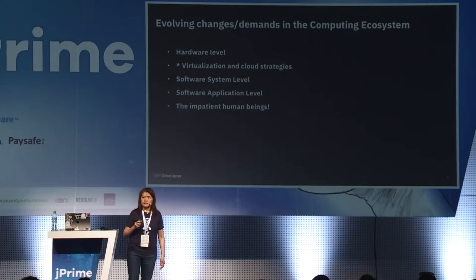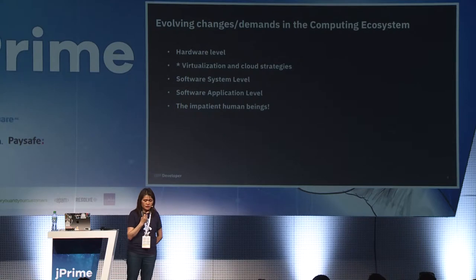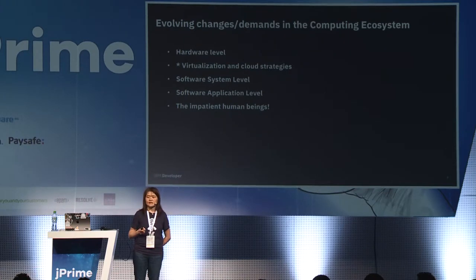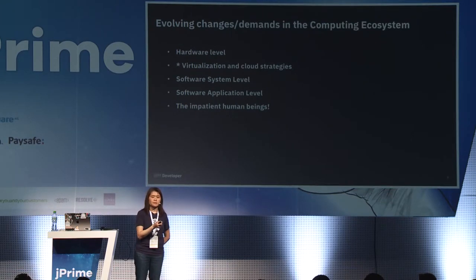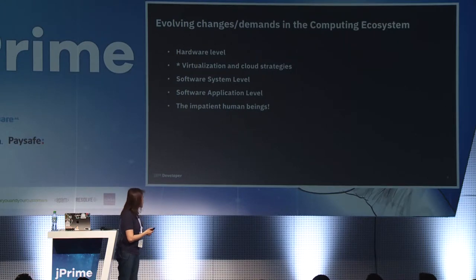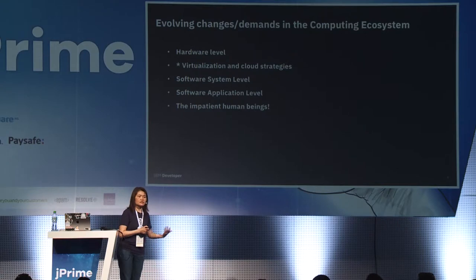On the software and systems level, think of us human beings. We used to have maybe one cell phone to share among the family. But now there are multiple devices per person, so network access requires a lot more responsiveness. Software needs to catch up to take advantage of this hardware improvement. And above everything, it's us impatient human beings that drive this forward.